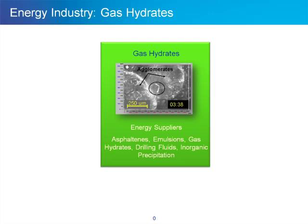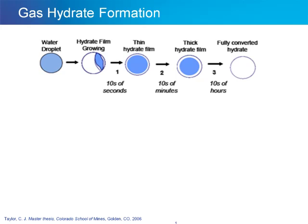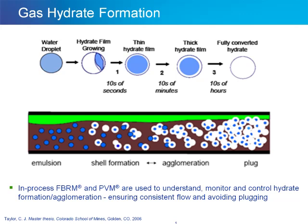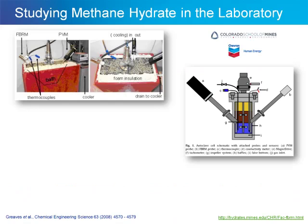Our next example is on gas hydrates. In this work, we are looking at the gas hydrate formation process pictorially shown here. An initial water droplet will have a hydrate film grow upon it, thicken, and ultimately fully convert into a hydrate. These hydrates may agglomerate and plug a pipeline, causing flow assurance issues.